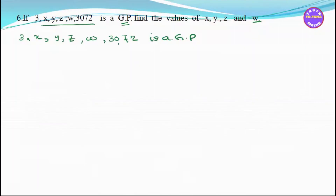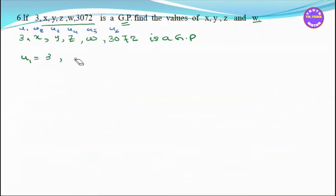This is a GP sequence. In the GP sequence, U1 equals 3 and U6 equals 3072. We identify U1 through U6, where U1 is 3 and U6 is 3072.